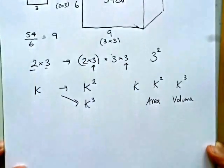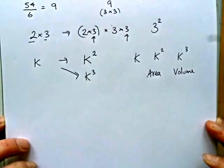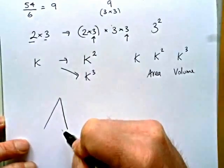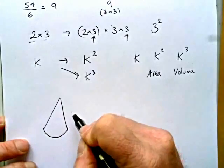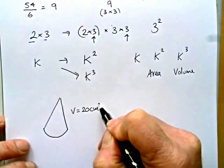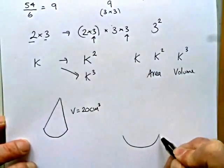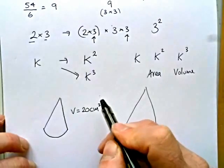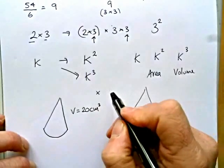So, let's apply that to a practical problem. Let's suppose that we had a cone, and the volume of the cone was 20 centimeters cubed. What would the new volume be under a factor of enlargement of times 3?